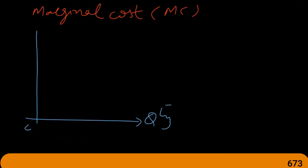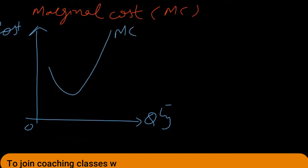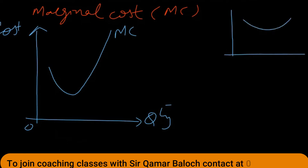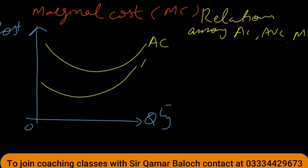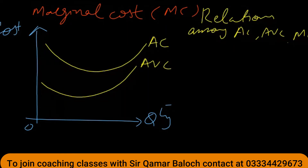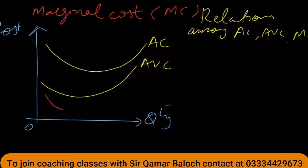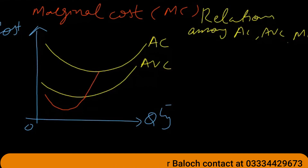On the x-axis we have quantity produced and on the y-axis we have cost. The marginal cost curve looks like a U-shape, as do average costs. Average cost and average variable cost are also U-shaped. Marginal cost starts below these curves, then intersects from the minimum point of average variable cost, and then intersects from the minimum point of average cost, rising above both curves thereafter.